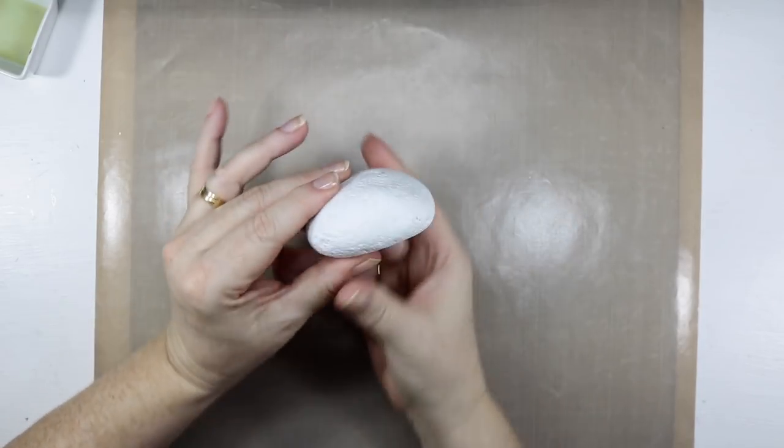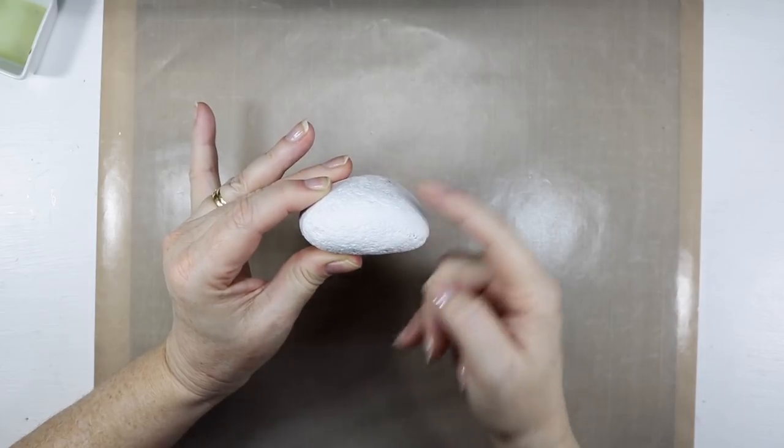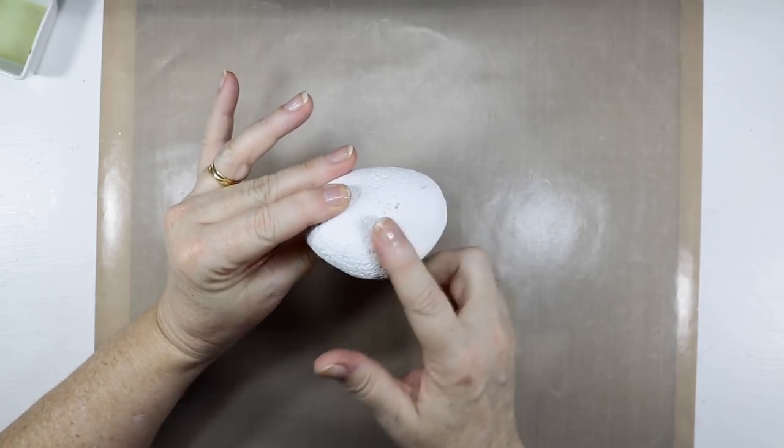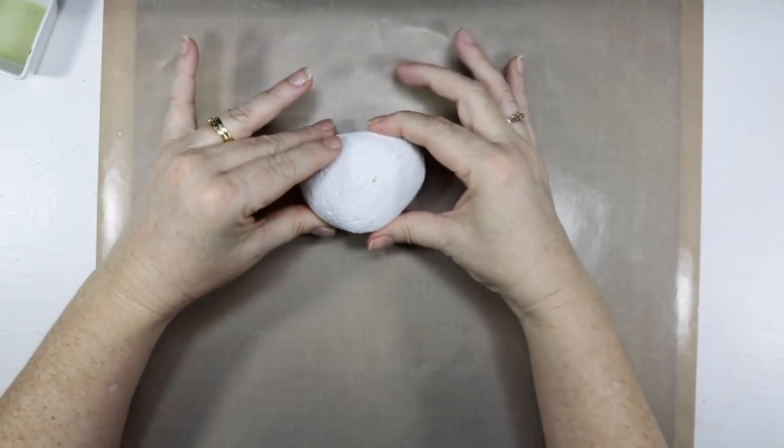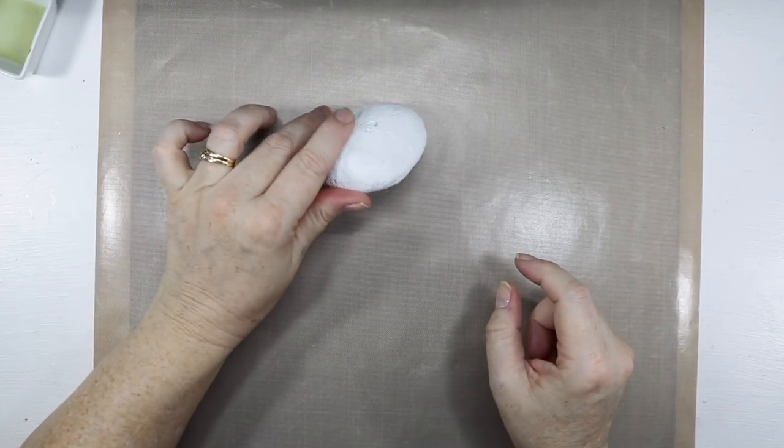So this rock here that I've picked out of my garden has got a bit of a flat edge on here and I thought what I wanted to do was put a word on here that I'll cut out with the word die and I'll glue that on using some matte mod podge.